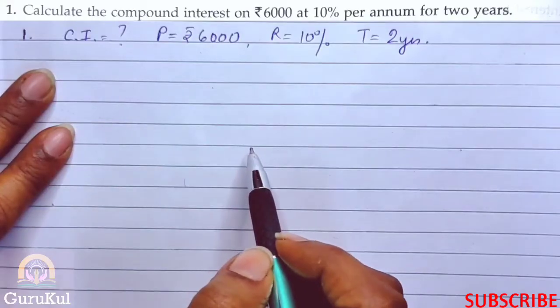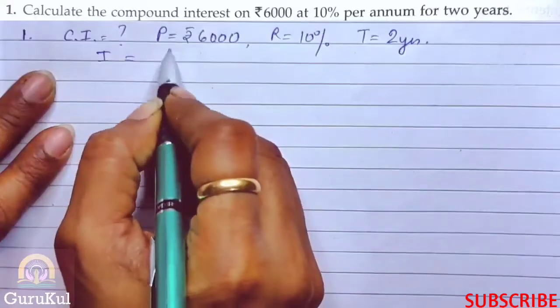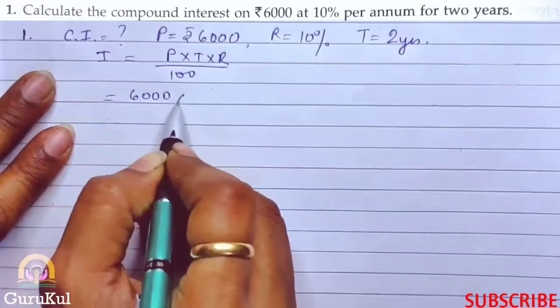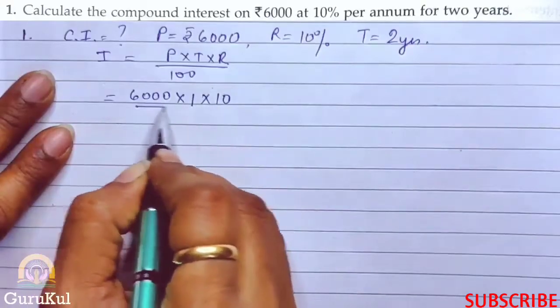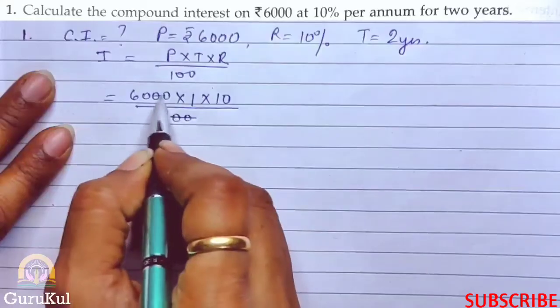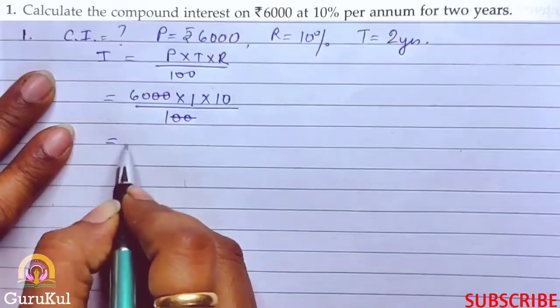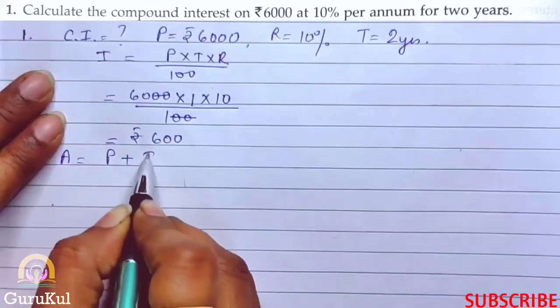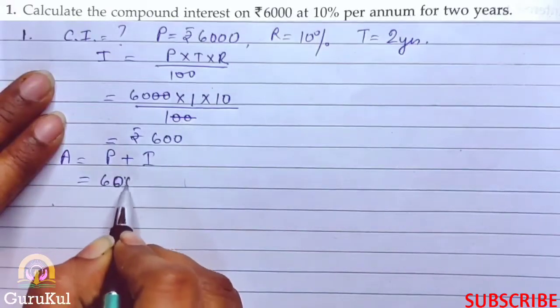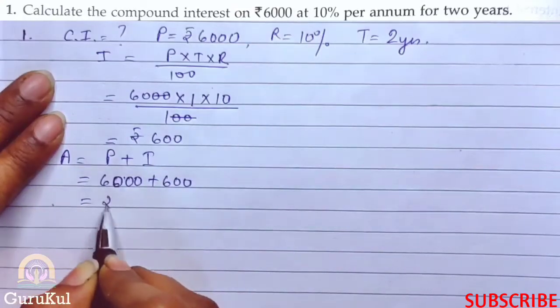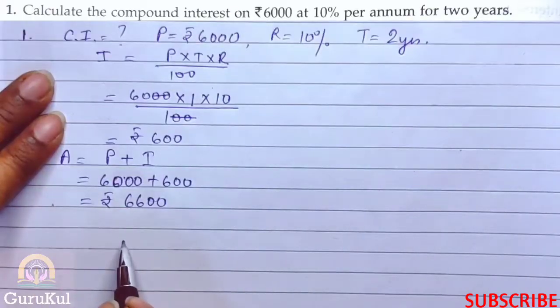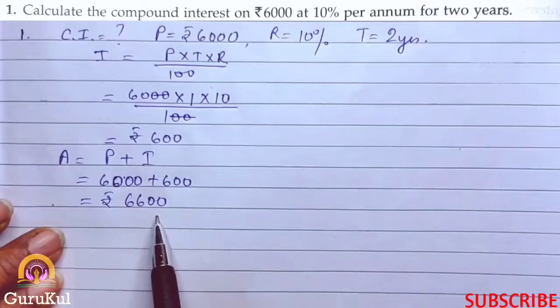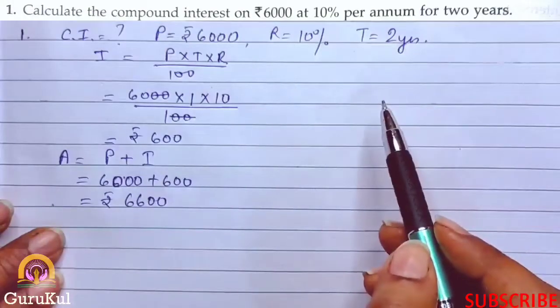We are solving it, kindly follow. Interest equals P into T into R by 100, so P is 6000 into time we take 1 year into rate 10 by 100. Equal number of zeros got cancelled. So our interest is ₹600, so amount is principle plus interest, that gives us 6000 plus 600 which is 6600.